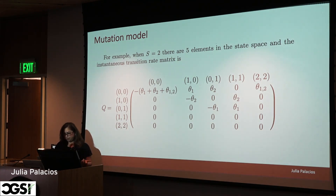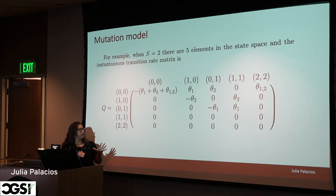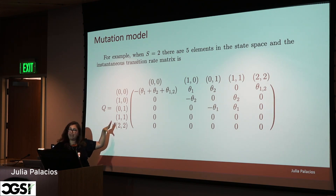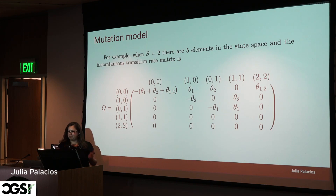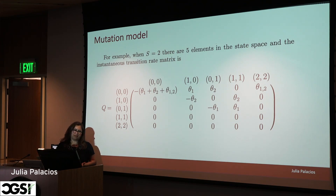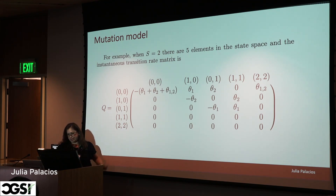For those familiar with continuous time Markov chains: the concern is that when you have a very large Q-matrix, computing transition probabilities requires matrix exponentiation. If it's a 10×10 matrix that's fine, but if it's 1,000×1,000 you are already in trouble, and anything bigger than that is impractical. I will come back to that.